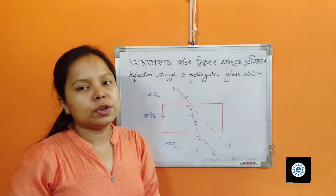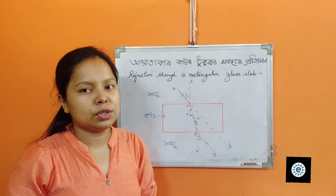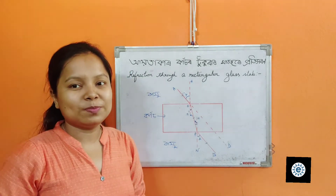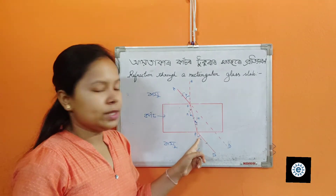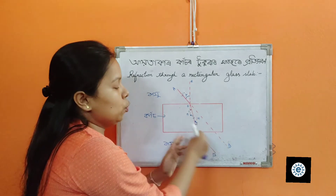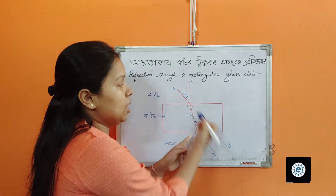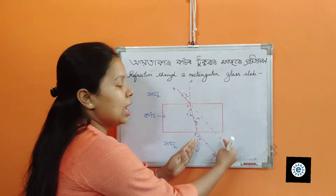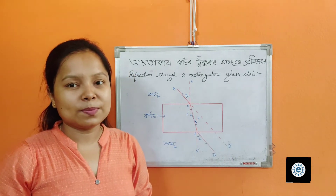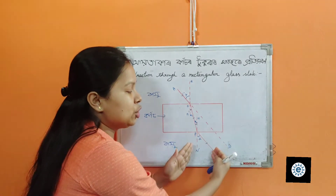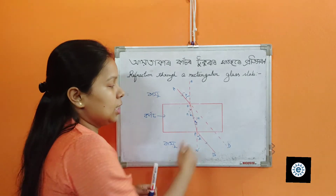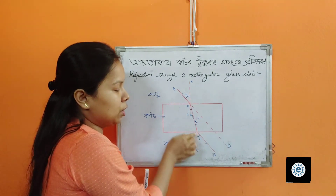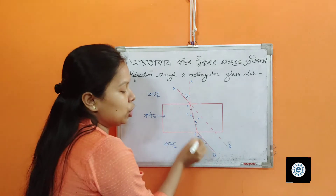The ray emerging from the glass slab, PB, is called the emergent ray. If we observe the emergent ray PB, it is parallel to the incident ray AO. The glass slab only causes a parallel shift in the ray of light. There is only a parallel shift in the ray of light.